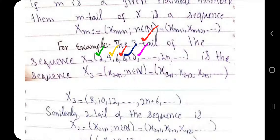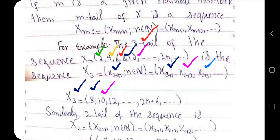After skipping the first three terms, the terms of the 3-tail are of the form x_{3+n} where n belongs to the natural numbers. So the first term (n=1) gives us x_4 (the fourth term of the original sequence), the second term (n=2) gives us x_5 (the fifth term), and the third term (n=3) gives us x_6 (the sixth term), and so on. The original sequence had nth term equal to 2n, so these terms are 8, 10, 12, etc.